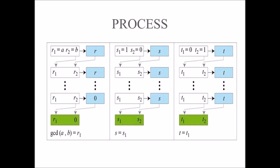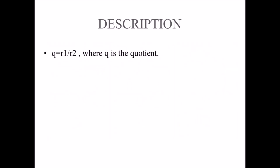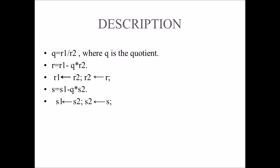The extended Euclidean algorithm uses the same number of steps as the Euclidean algorithm; however, in each step, we use three sets of calculations and exchanges instead of one. The algorithm uses three sets of variables: R, S, and T. The variables R1 and R2 are initialized to the values of A and B respectively. In each step, R1, R2, and R have the same values as in the Euclidean algorithm. The variables S1 and S2 are initialized to 1 and 0 respectively. The variables T1 and T2 are initialized to 0 and 1 respectively. We calculate the value of R, S, and T in each step and perform the corresponding exchanges.